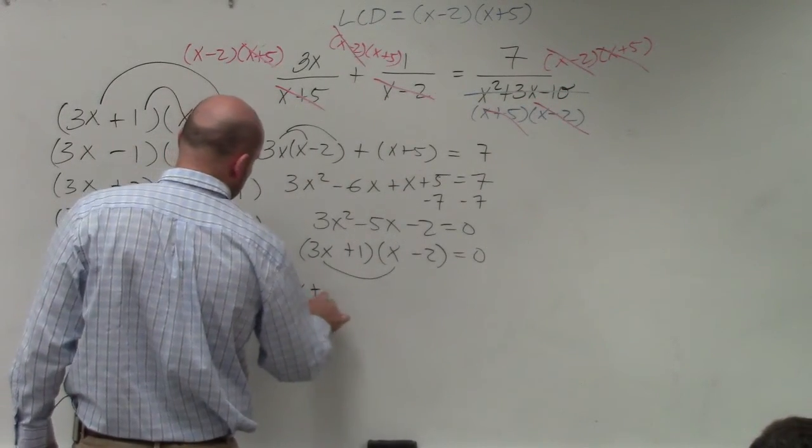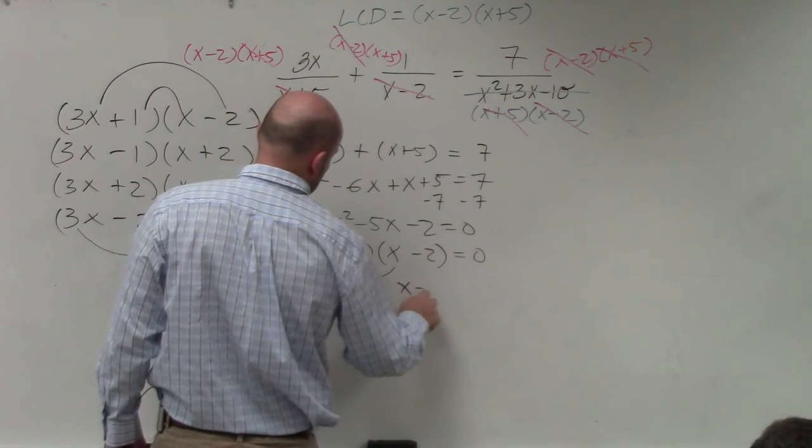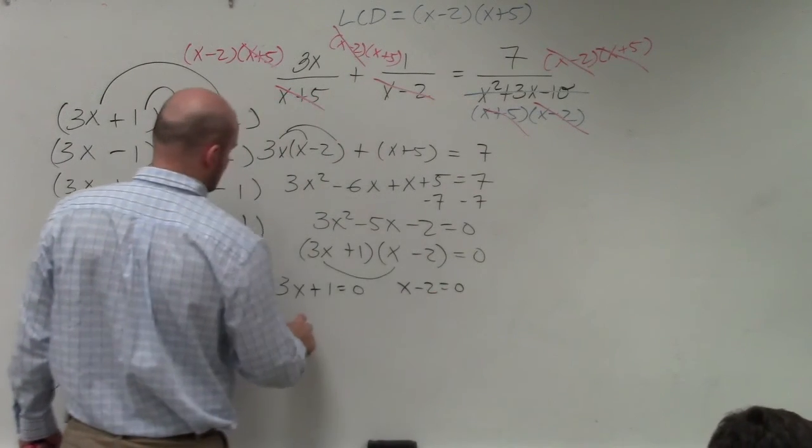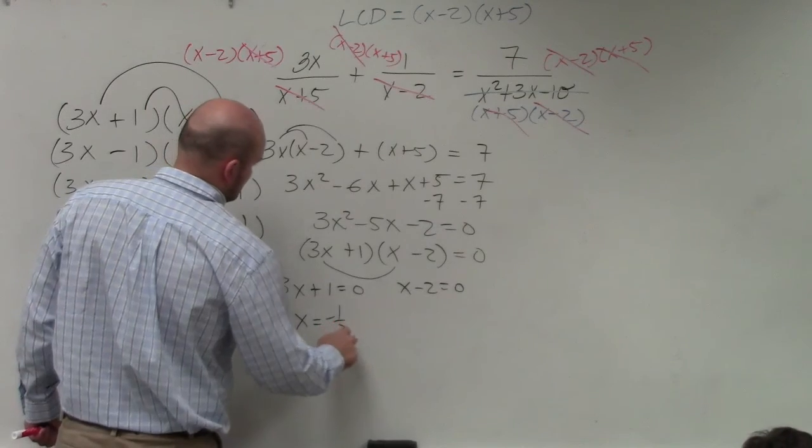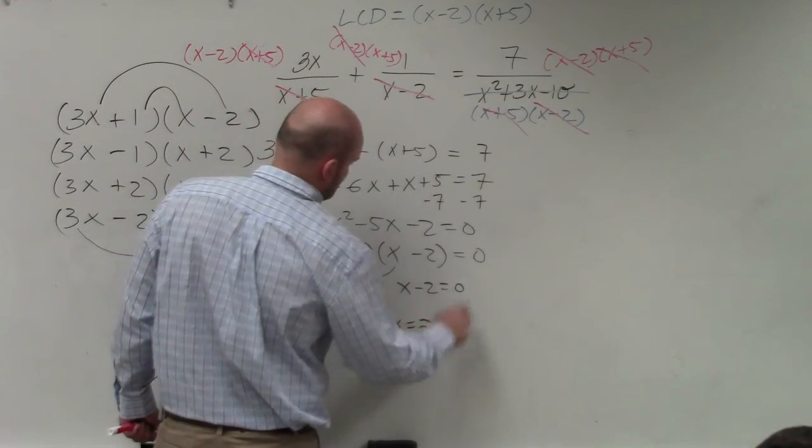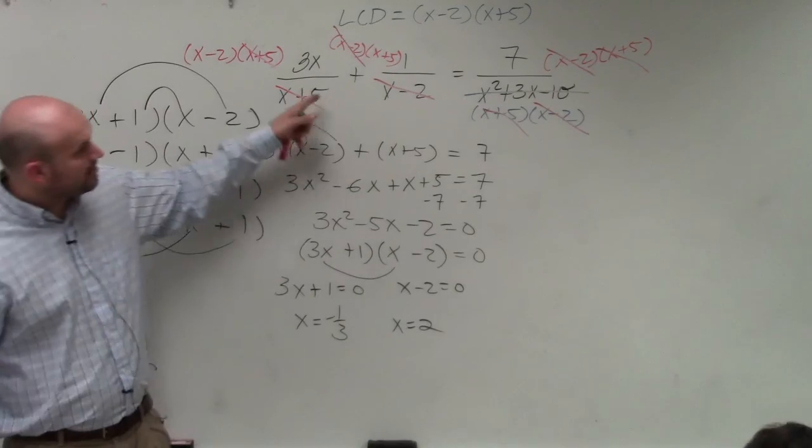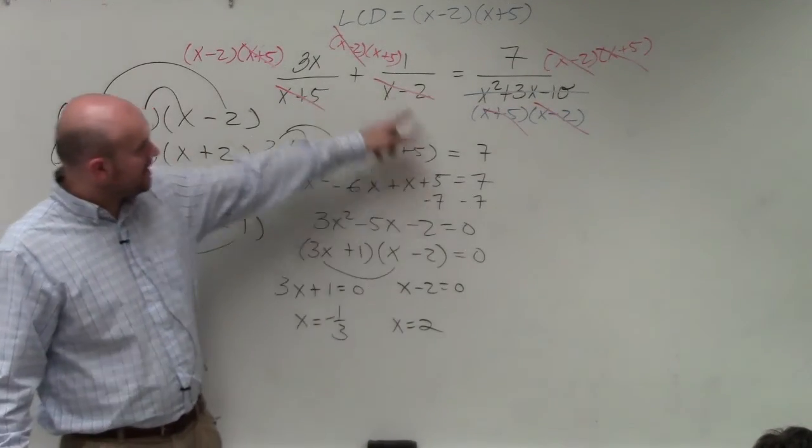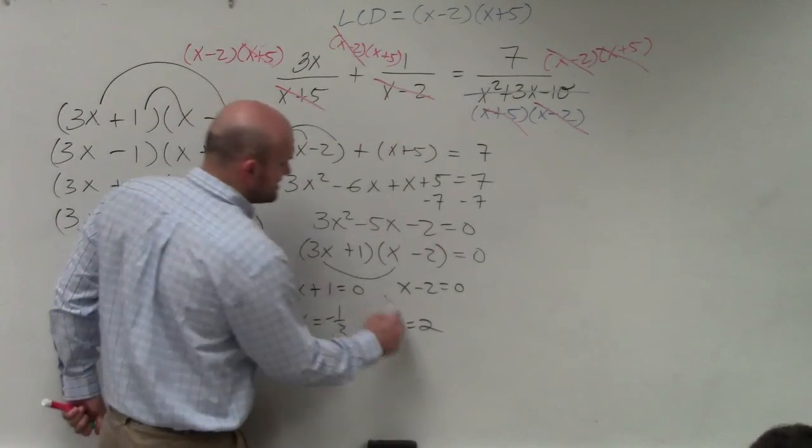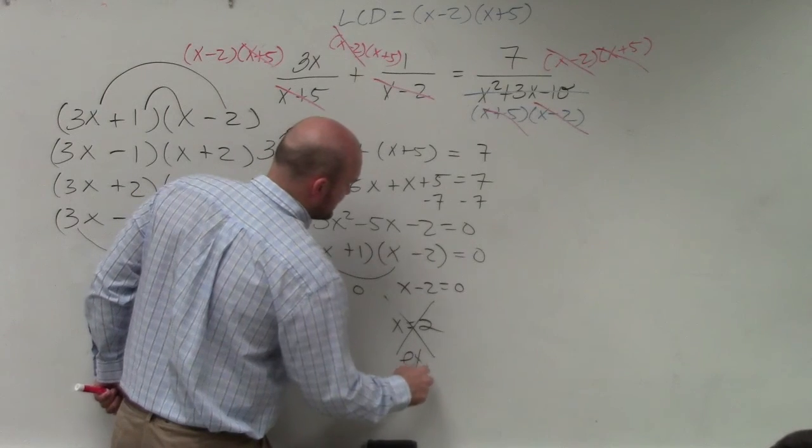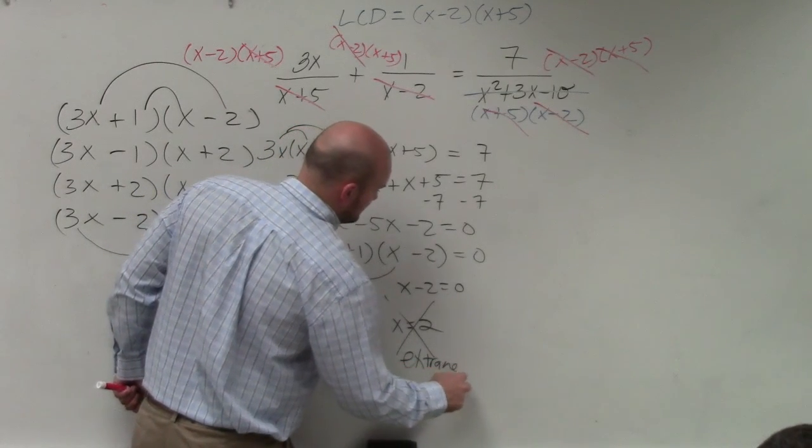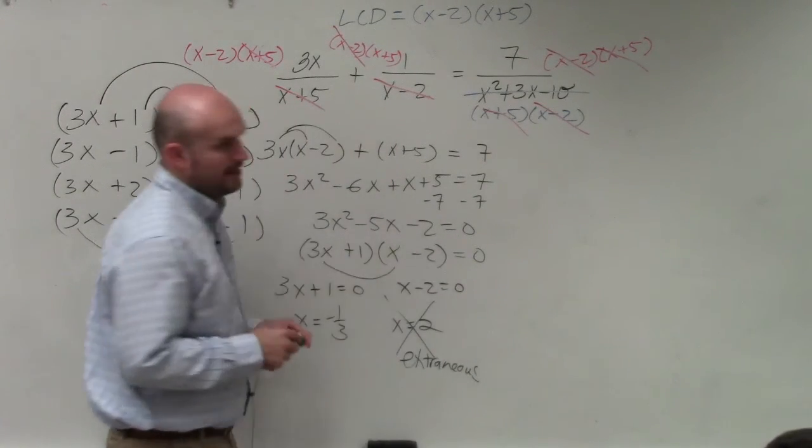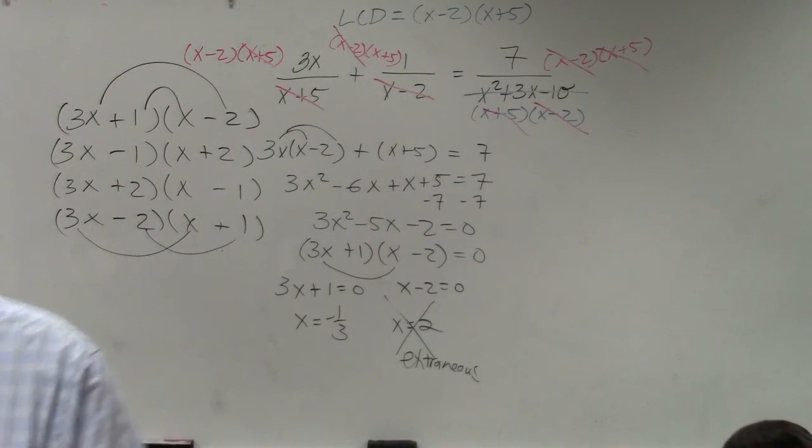And then, therefore, now I can apply the zero product property. Then, I go back and I plug my answers back in. And I notice when I plug 2 in for x here, that makes that 0. So therefore, that's extraneous. Okay, you will be asked about extraneous solutions, so make sure you know.